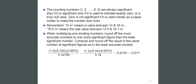So when multiplying and dividing, round off to one more significant figure than the least significant number, then compute and round off the result to the same number of significant figures as in the least accurate number. That concludes this video — thank you for watching.